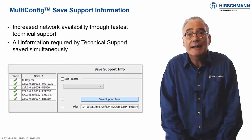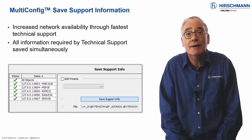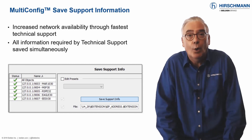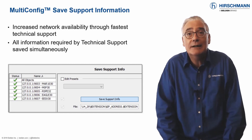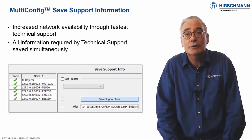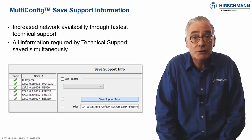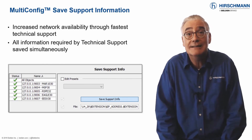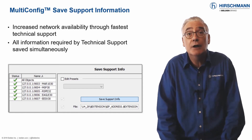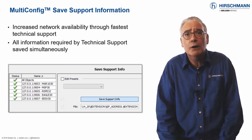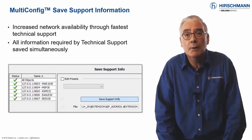You could manually collect the information from each device, which would be stressful during a fault situation. Or you could use the multi-config save support information option. With a couple of clicks, all the required support information will be downloaded from your switches to your industrial HiVision PC, then zipped into an archive, ready to be forwarded to our help desk. This enables the technician to start work on your network issue with the minimum of delay.